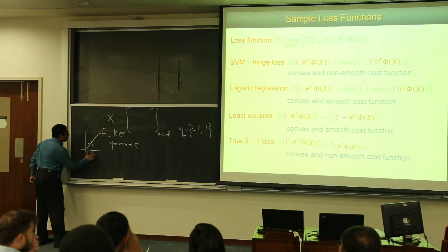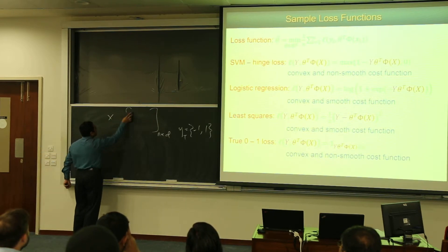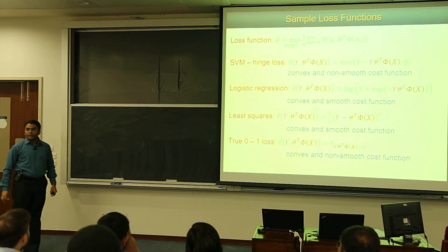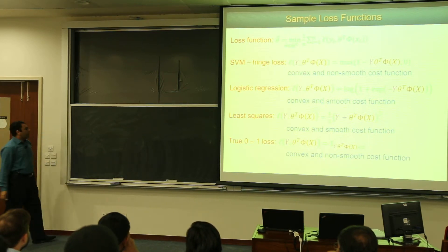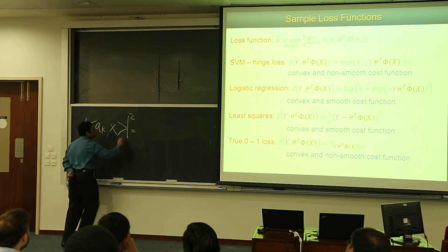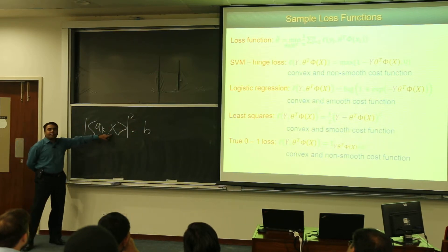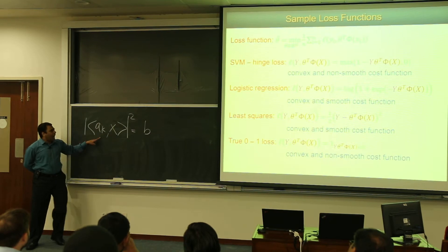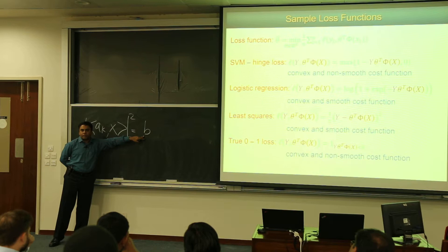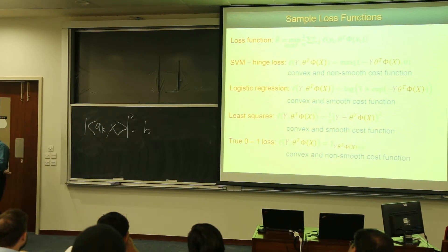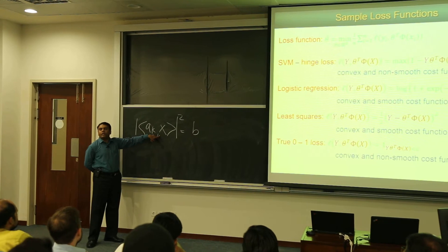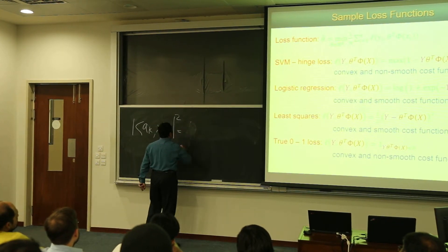As an example from phase retrieval: what we do is take inner products with a sampling operator X, take the magnitude response, and try to estimate X. Given the operator A_k and measurements B, this is essentially the Fourier coefficients squared — the magnitude response — which is a nonlinear function of X because there is a square involved. So solving this expression as written involves a nonlinear function.